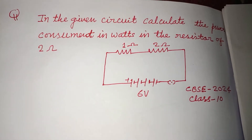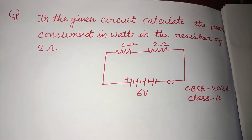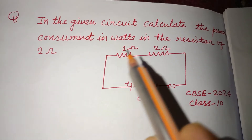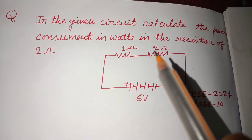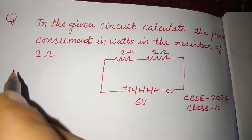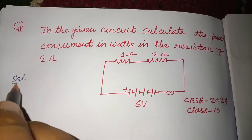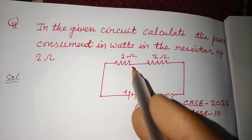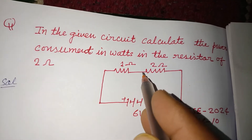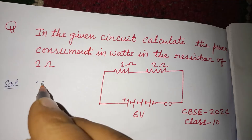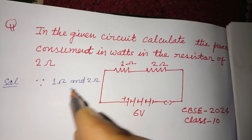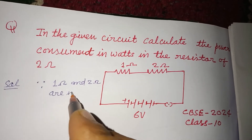Hello viewers, warm welcome to this YouTube channel. This is a question from the CVSC board exam 2024, class 10. In the given circuit, calculate the power consumed in the resistors of 2 ohms. Here we have two resistances of 1 ohm and 2 ohm, and they are connected in series.